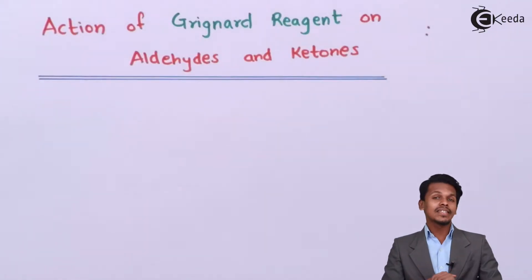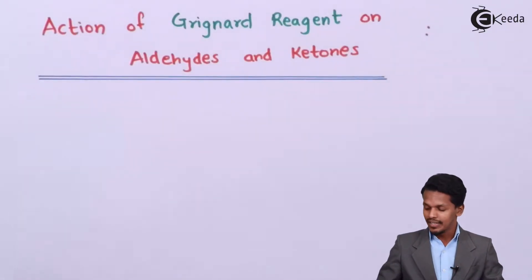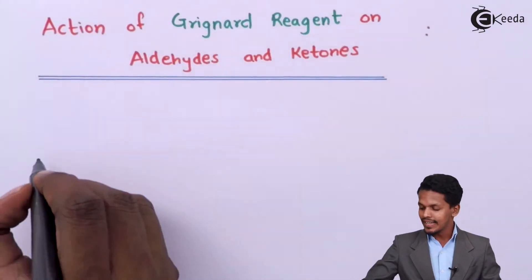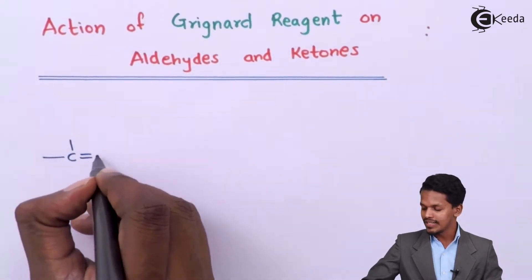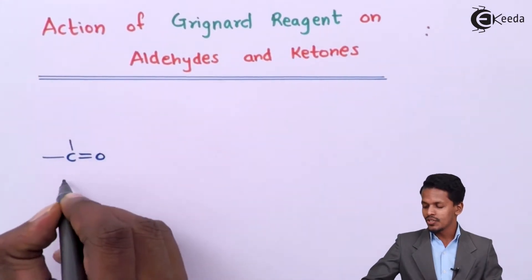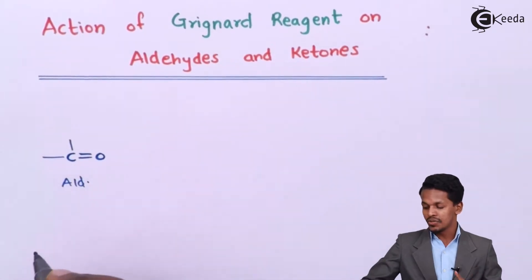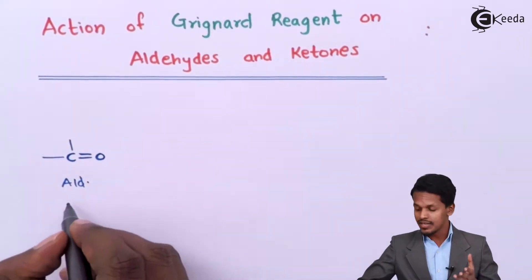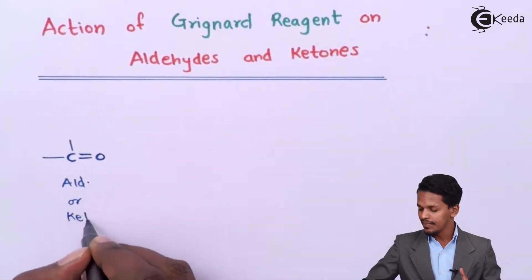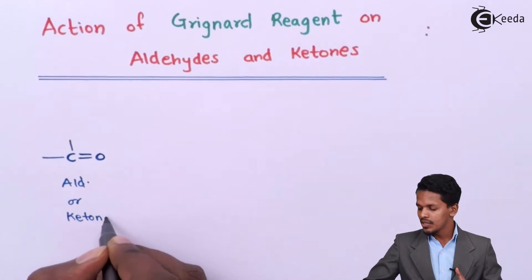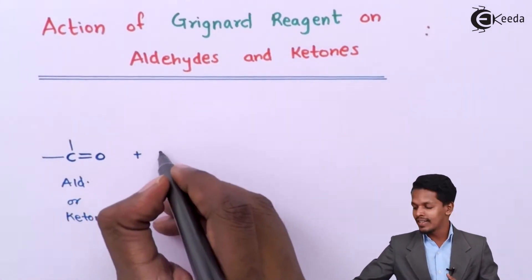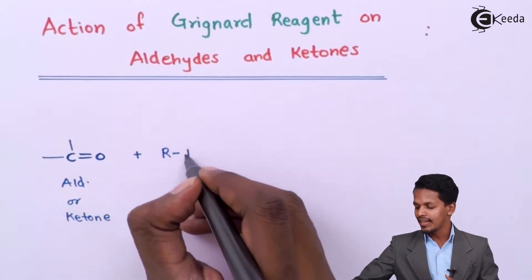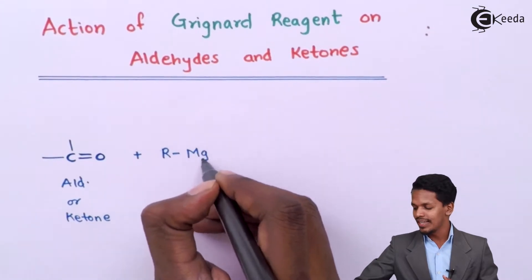Let me discuss the general reaction. Aldehyde and ketone consist of a common carbonyl group, that is C double bond O, and this could be an aldehyde or a ketone. Suppose it reacts with the Grignard reagent, represented by RMgX.